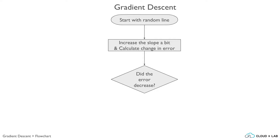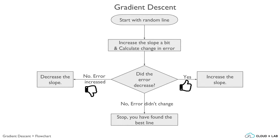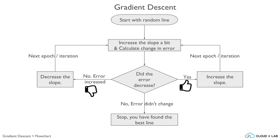To compute the change in error, we will have to consult all the training instances. If the error decreased due to increasing the slope, we continue to increase the slope in a greater amount proportional to the rate of change. Otherwise, if the error has increased, we go in the opposite direction, decreasing the slope in proportion to the rate of change. Larger the change in error per change in slope, larger the tweaking we do. If the error did not change, we stop because we have probably found the best fit line. Afterwards, we go back to tweaking — this is called the next epoch or next iteration. We continue until the error is no longer changing. The model is the line which has two parameters: slope and intercept. The way we tweak the slope, we would be tweaking the intercept too.